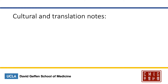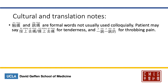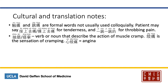Your patient may not use the formal words for tenderness and throbbing. The formal words are 触痛 and 跳痛. Colloquially, your patient may say 按上去痛 or 摸上去痛 for tenderness, and 一跳一跳的 for throbbing pain. The sensation of cramping is called 绞痛, while the actual verb describing the action of muscle cramping will be 抽筋 or 筋挛. Another place you may hear 绞痛 is 心绞痛 — the sensation of cramping of the heart — which equals angina.